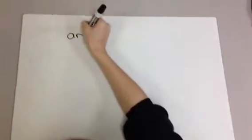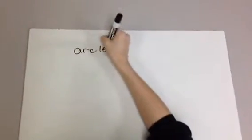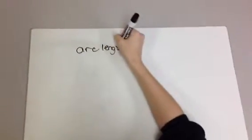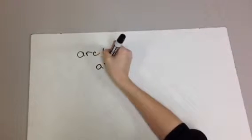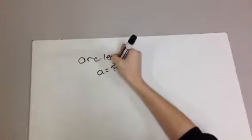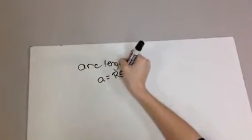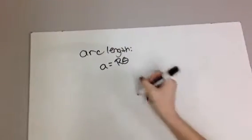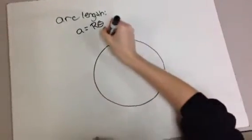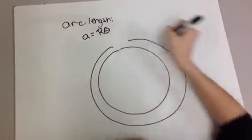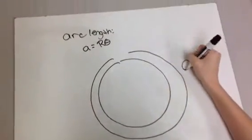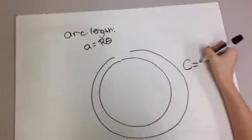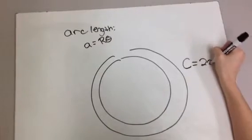The equation for arc length is A equals R theta. The complete rotation of a circle is two pi radians. Therefore, C equals two pi r.